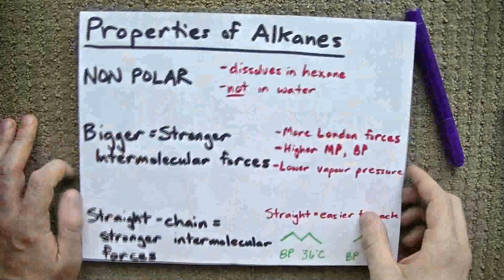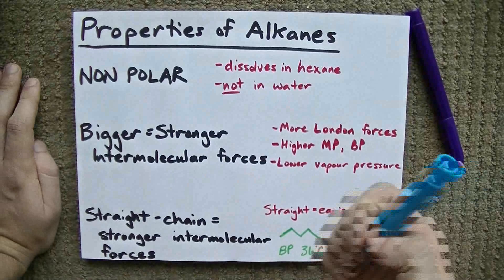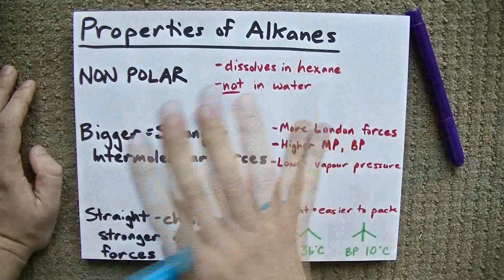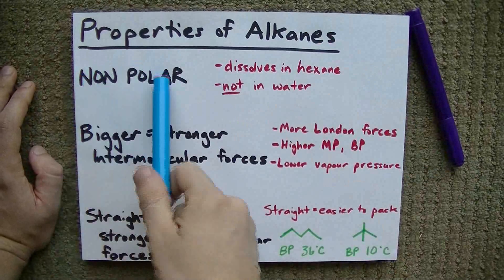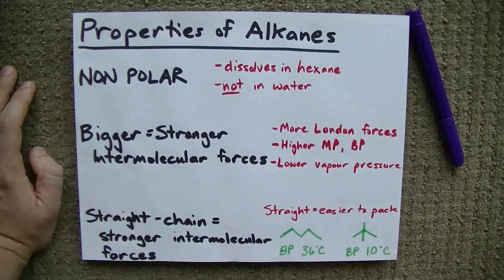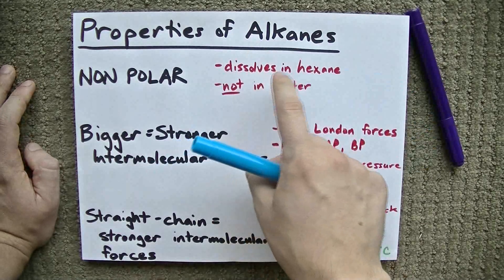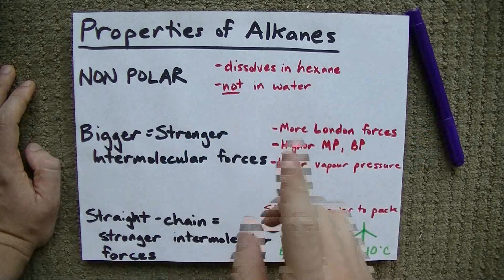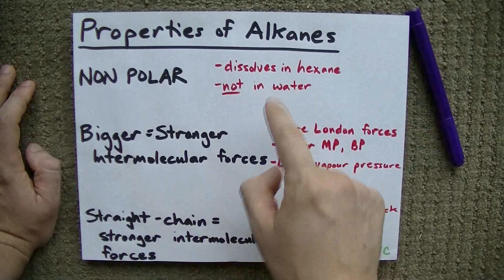The last thing I want to talk about with alkanes are some of the properties. Because it's only carbon and hydrogen, there's no real electronegativity difference between the two, and it's a non-polar molecule. What that means is that it will dissolve in non-polar solvents like hexane, but it won't dissolve in things like water.